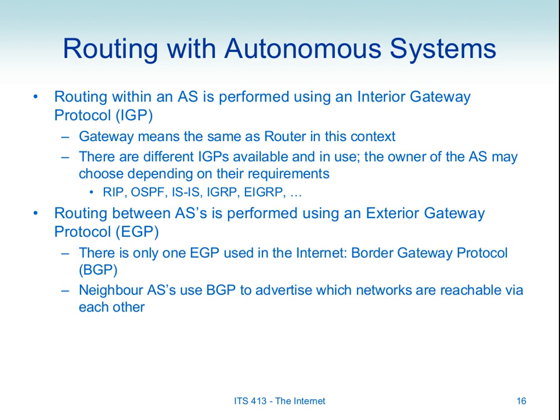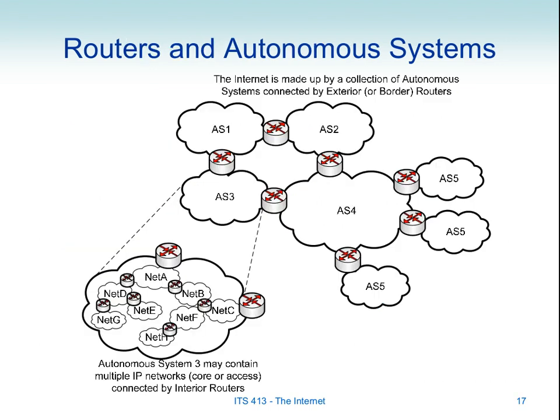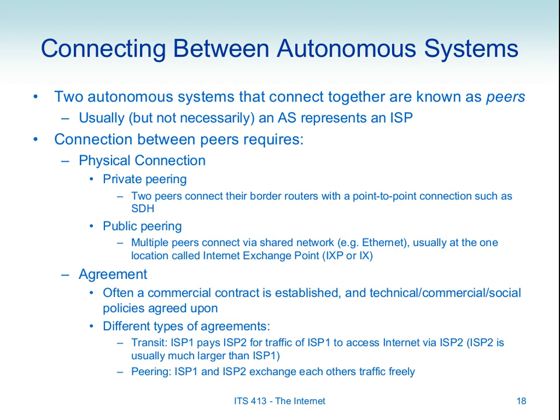Here's a different example where we have multiple autonomous systems — AS1, AS2, AS3, AS4, AS5, AS6. Note: the slide has a mistake — it shows three AS5s, but they should be AS5, AS6, and AS7. Zooming in on AS3 we see different subnets inside — this is inside the autonomous system where we use an interior gateway protocol, while between autonomous systems we use BGP.